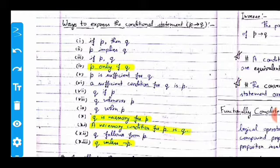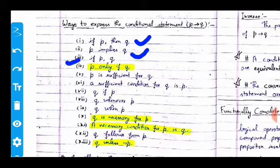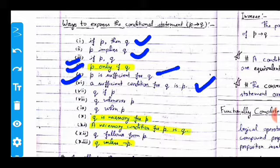There are multiple ways to express the conditional statement p implies q. These include: 'if p then q,' 'p implies q,' 'if p, q,' 'p only if q,' 'p is sufficient for q,' 'a sufficient condition for q is p,' 'q if p,' and 'q whenever p.'